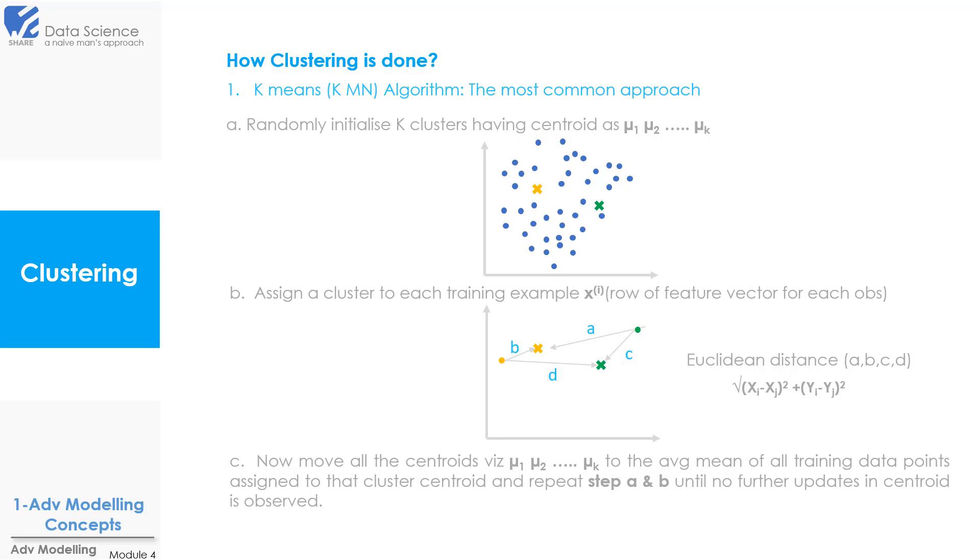As you know there are different distance measures but here we are using Euclidean distance. Now in the next step we would move all the centroids mu1, mu2 up to mu k to the average mean of all the training data points assigned to that cluster centroid. And then repeat step a and b until no further updates in the centroid is observed.